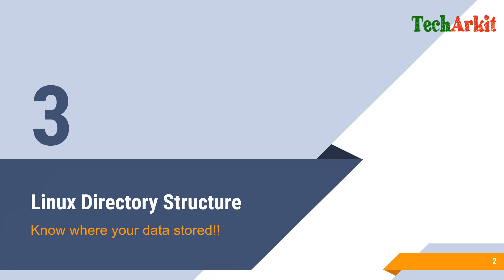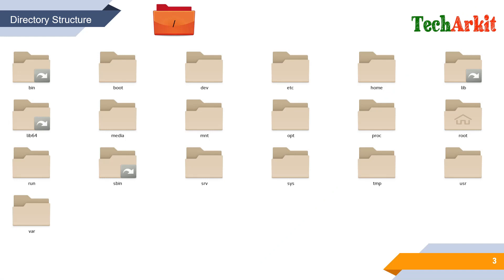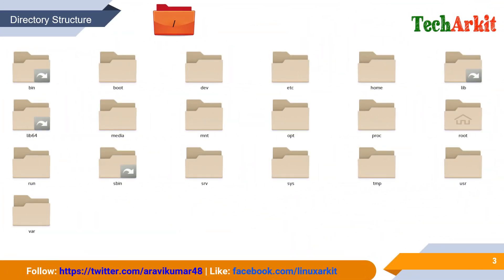So let's look at the directory structure. First of all, the top-level directory is slash (/), which is called the root directory — not the home directory for the root user, but the top directory for Linux. Under it, it contains many directories like bin, boot, dev, etc, home, lib, lib64, media, mnt, opt, proc, root, run, sbin, srv, sys, tmp, usr, and var. These are the most important directories that come by default with the operating system when you install it.